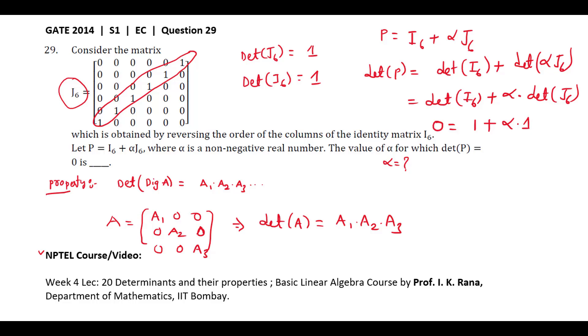This equals 0 because in the question determinant of P equals 0 for what values of alpha. When we equate this equation to 0, that means alpha plus 1 equals 0, then alpha equals minus 1.